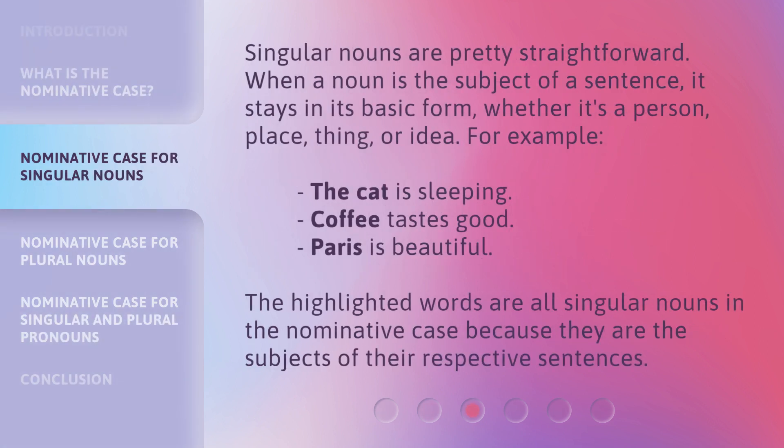Singular nouns are pretty straightforward. When a noun is the subject of a sentence, it stays in its basic form, whether it's a person, place, thing, or idea. For example: 'The cat is sleeping.' 'Coffee tastes good.' 'Paris is beautiful.' The highlighted words are all singular nouns in the Nominative Case because they are the subjects of their respective sentences.